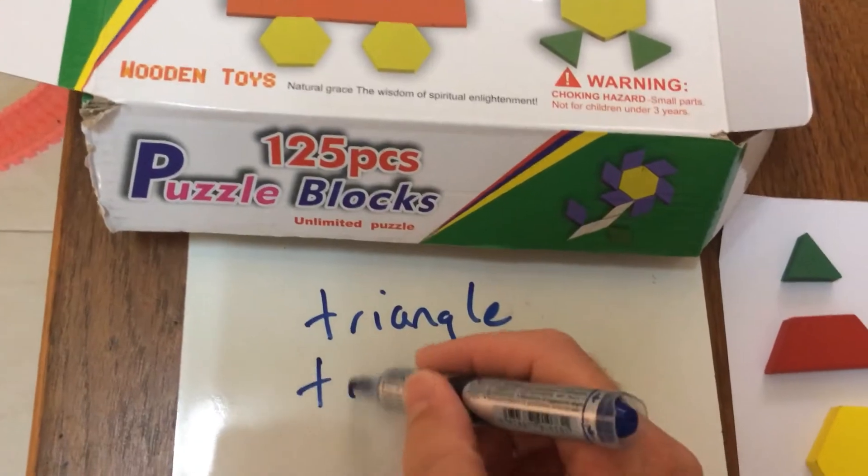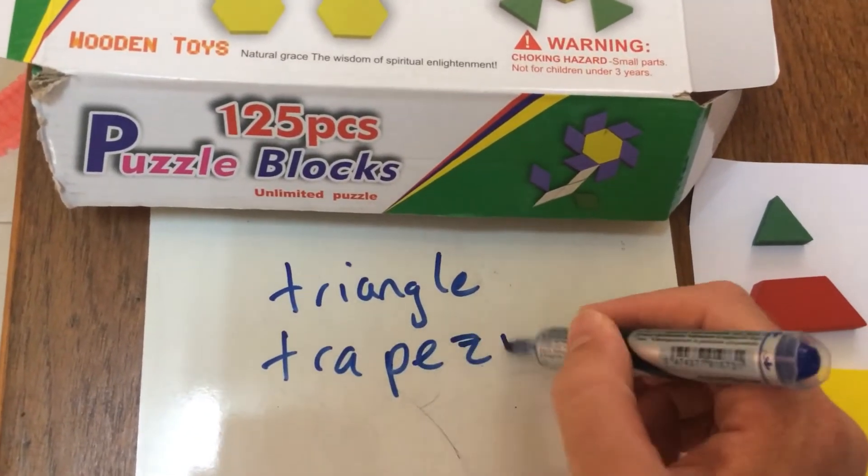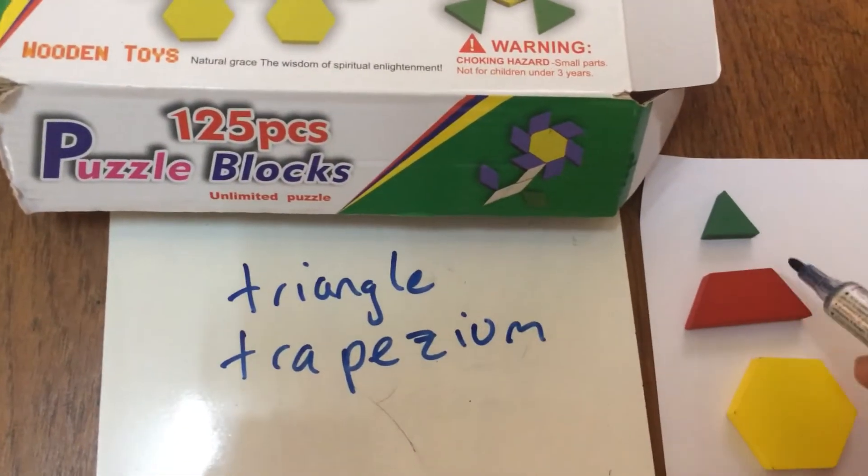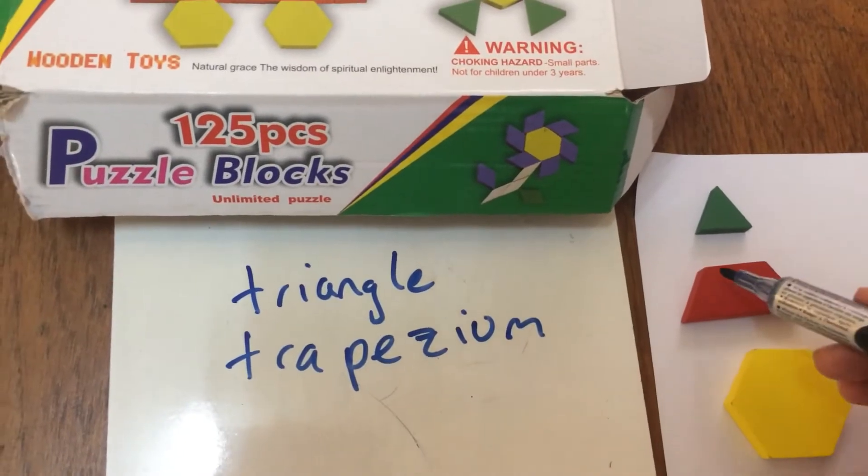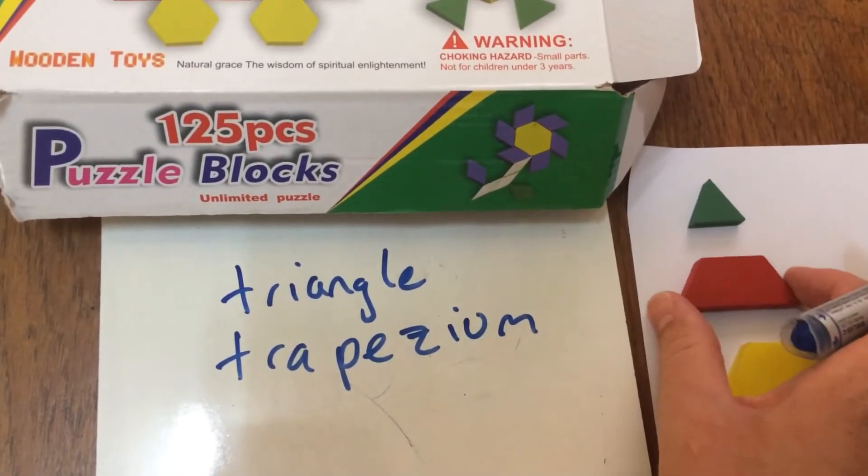Then it has a trapezium, two unequal parallel sides. But it's actually an isosceles trapezium because those base angles are equal.